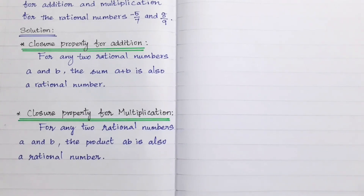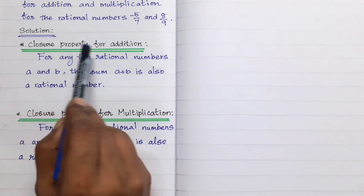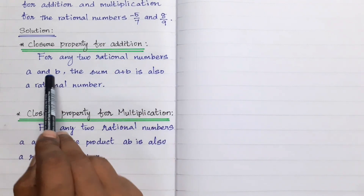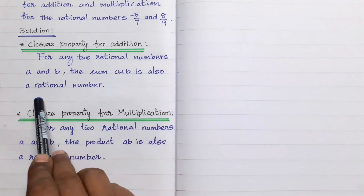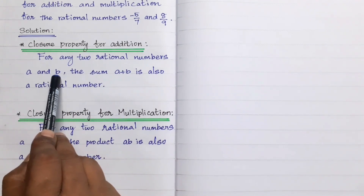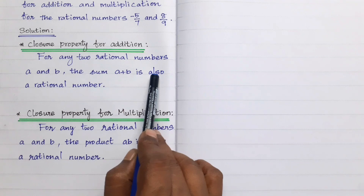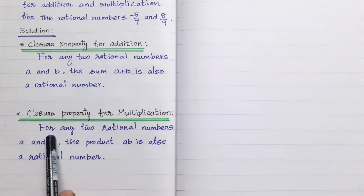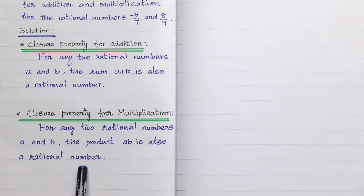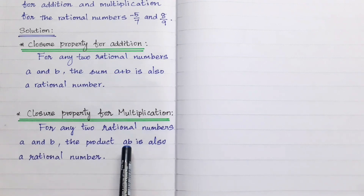We have to verify the closure property. Closure property for addition: for any two rational numbers a and b, the sum a plus b is also a rational number. That is, if a and b are any two rational numbers, then a plus b is also a rational number.